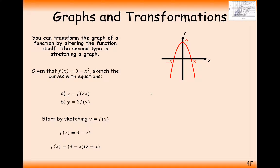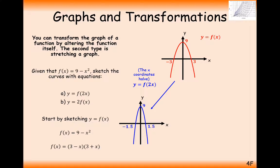For f of 2x, it's an inside-the-bracket transformation, hence we're going to have horizontal movement, and it's the opposite of how we'd expect. Maybe you'd expect it to double all of its coordinates and stretch it out by a factor of 2 — wrong. It's the opposite effect: it squishes inwards by a factor of a half. So the x-coordinates have now halved, now at minus 1.5 and 1.5, with the y-coordinate of 9 remaining. If it's on the left-hand side, it squishes inwards that way, and if it's on the right-hand side, it's been squished inwards that way.